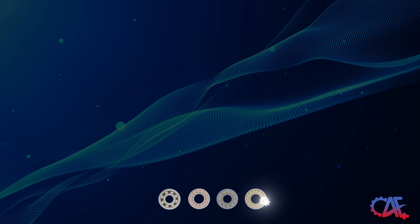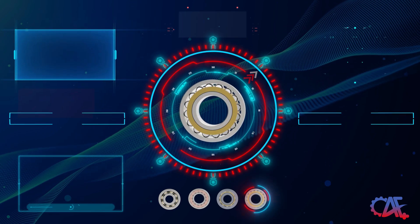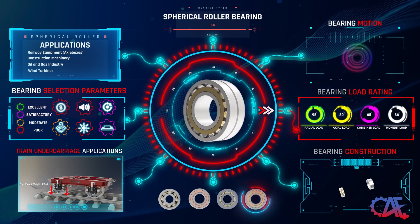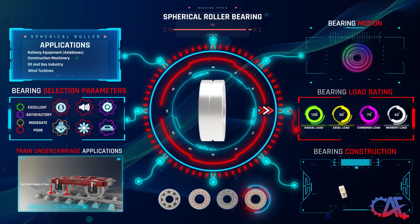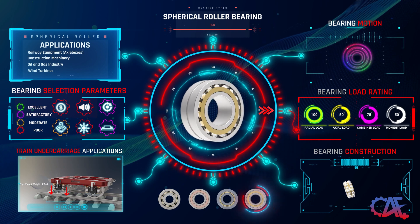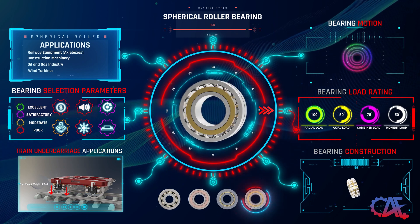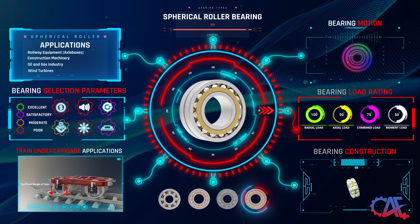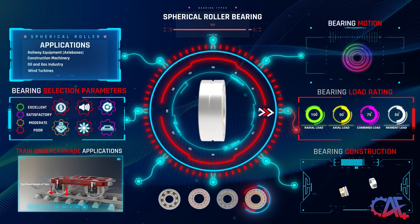Our final bearing selection is the spherical roller bearing. These bearings are distinctively designed to manage both radial and axial loads, even when misalignments between the shaft and bearing are present. They excel in handling radial loads, are moderate for axial loads and perform well under combined loads. They also have a moderate capability to tolerate misalignment.